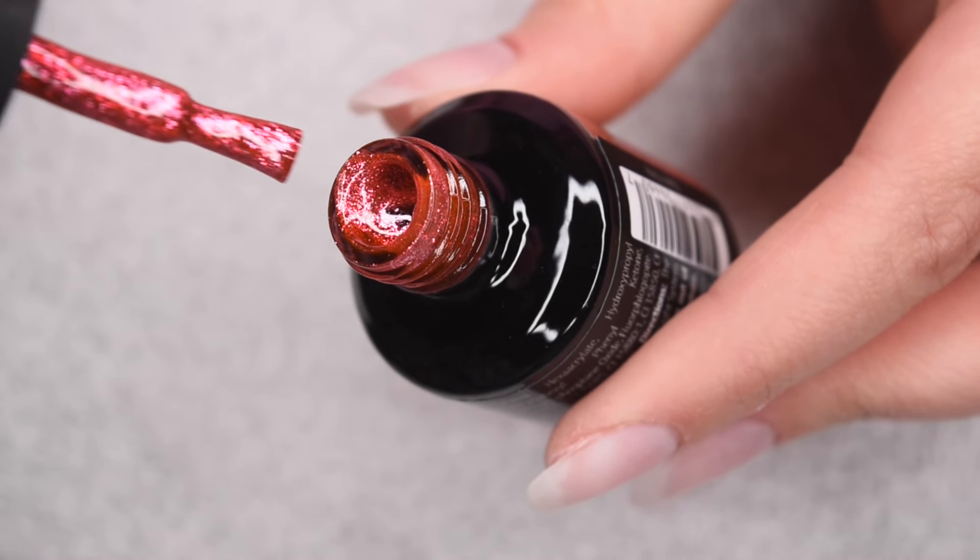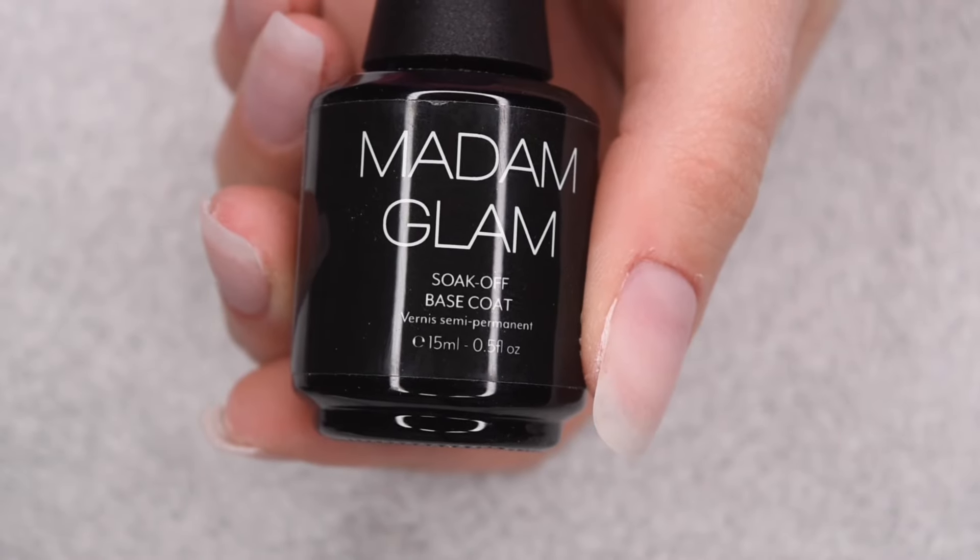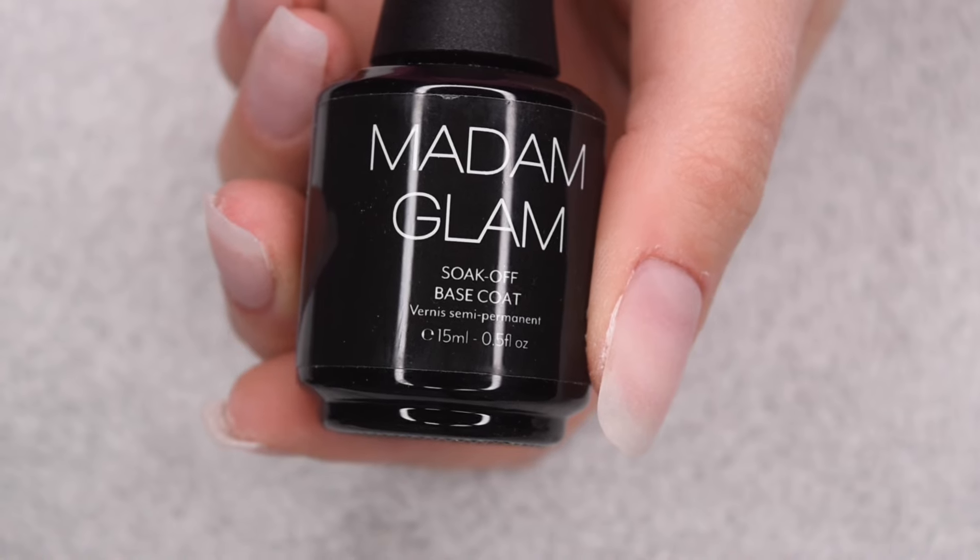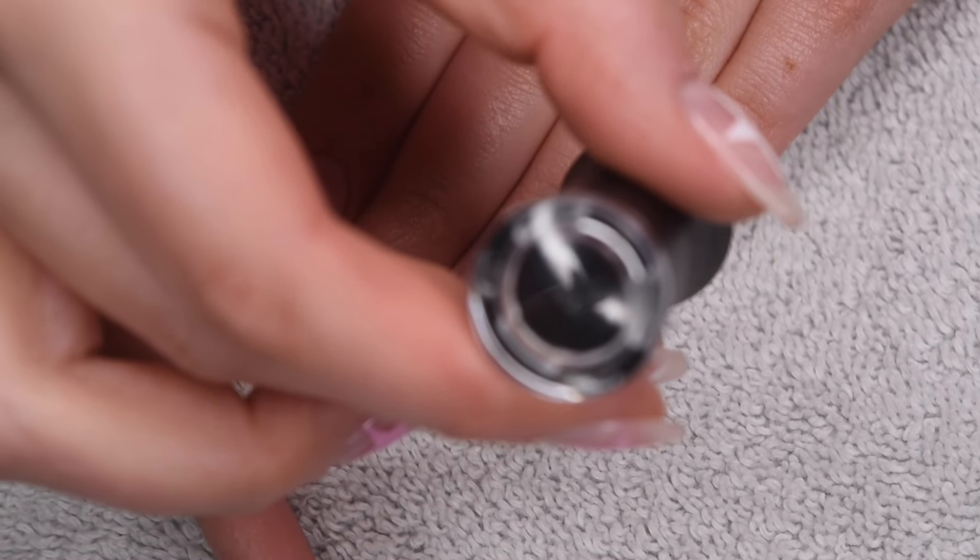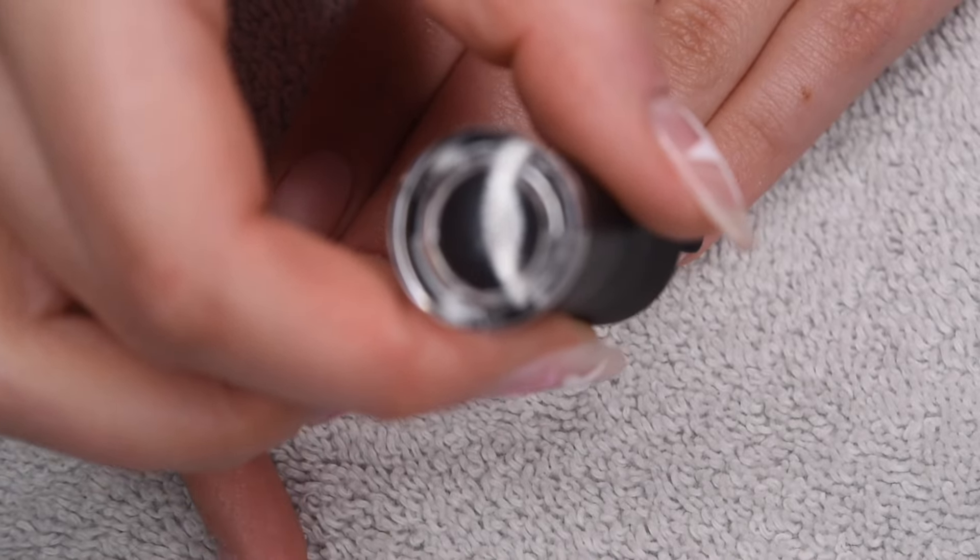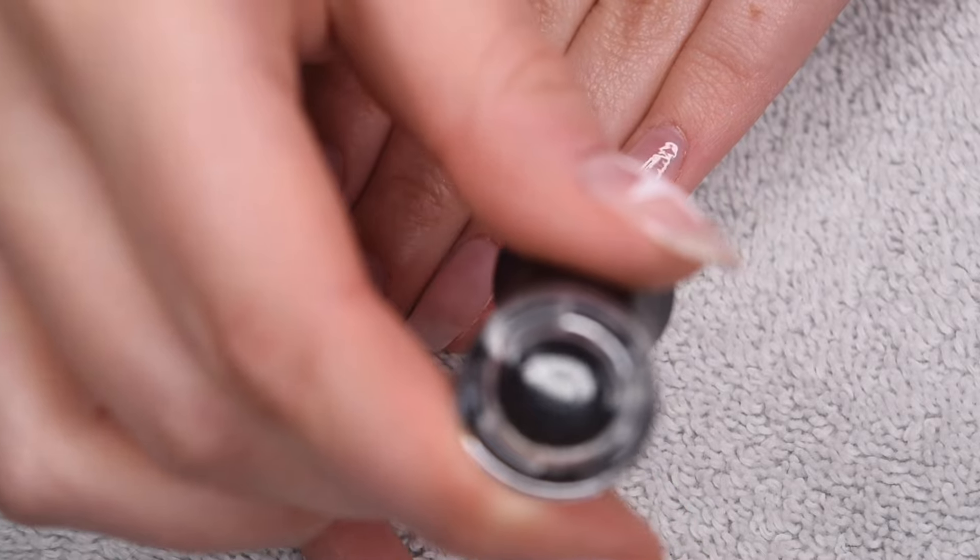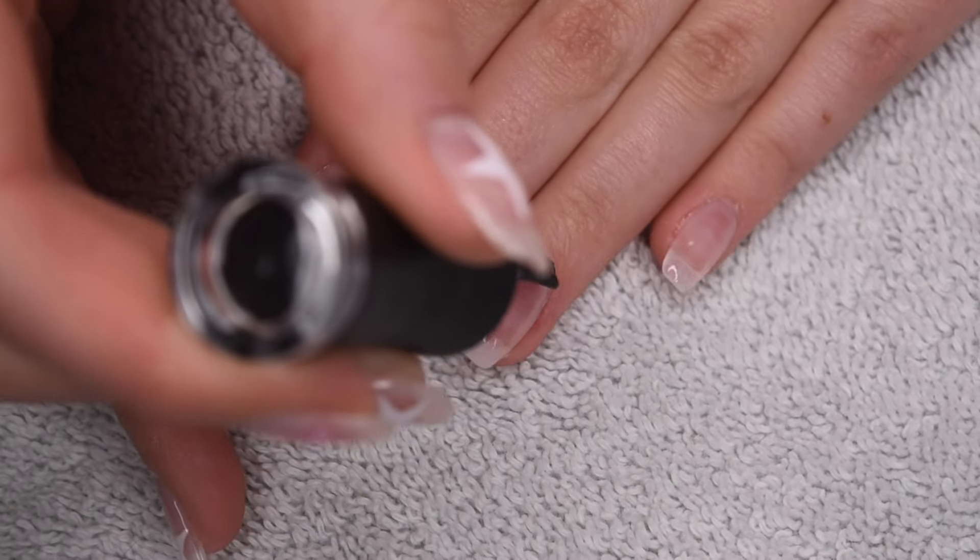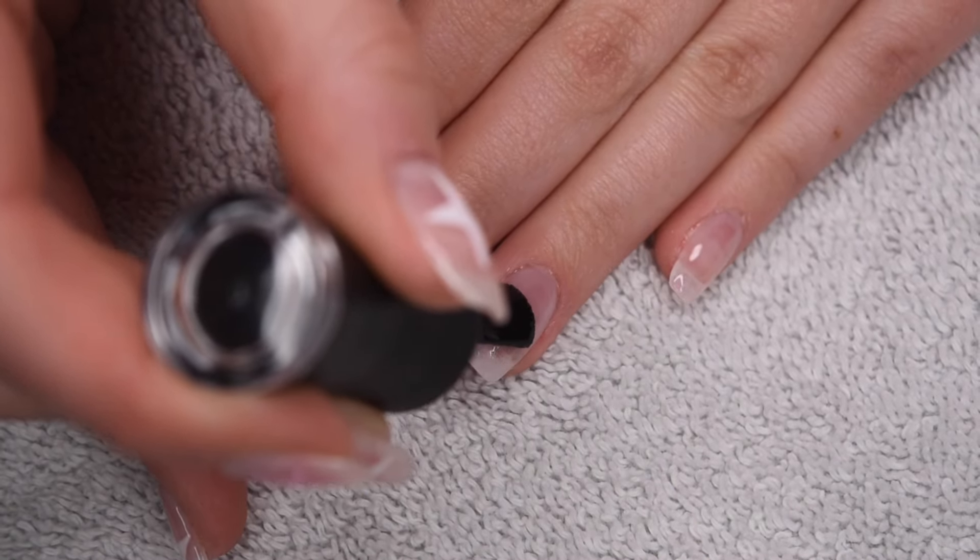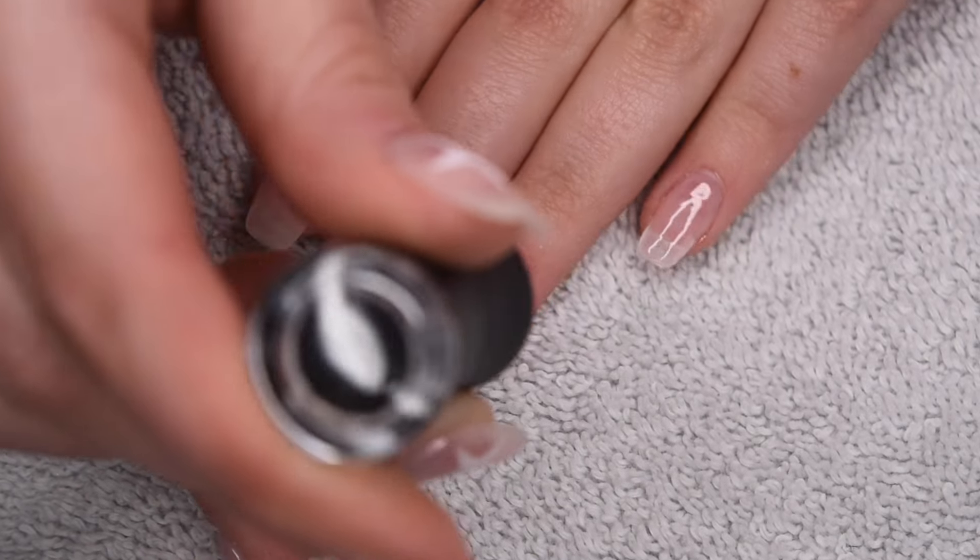So before I get to applying the color on my nails, I'm going to go in with my Madame Glam Soak Off Gel Base Coat. This is just going to allow the gel polish color to really adhere to the dip powder layers underneath. So I'm doing a nice thin coat of the gel base coat. And once happy with the application, I will cure in my LED lamp for 30 seconds.